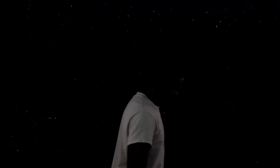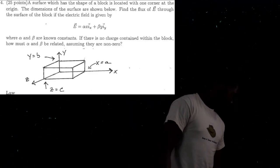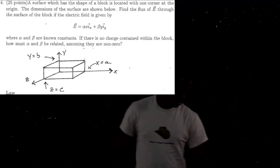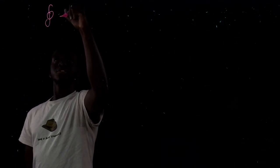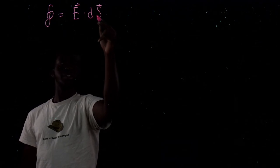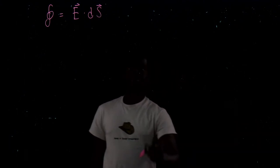The last question, number four — the easiest on the exam — involves flux. A block-shaped surface is located with one corner at the origin with dimensions shown. Find the flux of E through the surface, where E = alpha x i-hat x + beta y i-hat y, with alpha and beta known constants. Also find how alpha and beta must be related if there is no charge within the block.